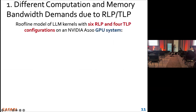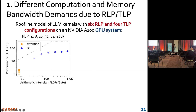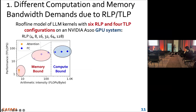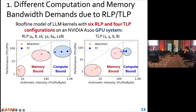First, we analyze the roofline model of LLM kernels with different RLP and TLP configurations on our GPU system. As you can see, the yellow one shows attention kernels and the blue one shows FC kernels. With different RLP configurations, all the attention kernels and parts of the FC kernels are memory-bound, but the other FC kernels are compute-bound. The same situation holds with different TLP.